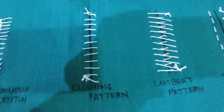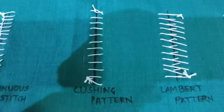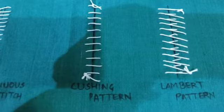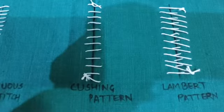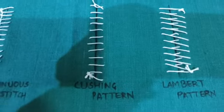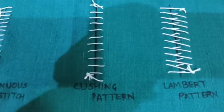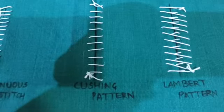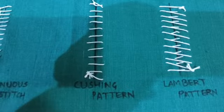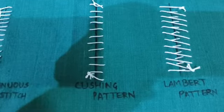The fourth one is the cushing pattern. This pattern is used as an inversion suture, and it is used for the apposition of the intestine, urinary bladder, and uterus where the serious layer is present.